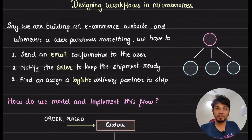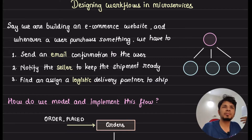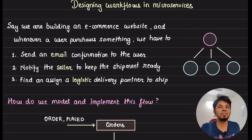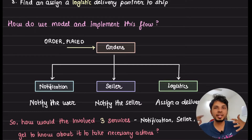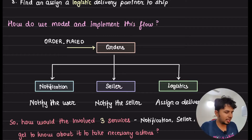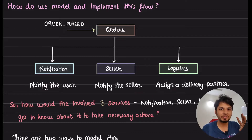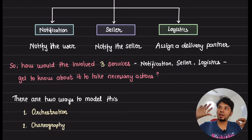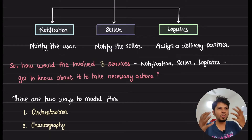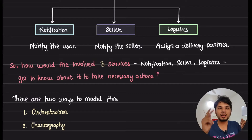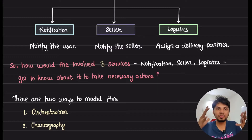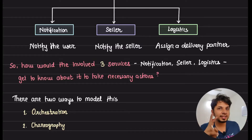Now, how are we going to implement workflows in a pure microservices-based architecture? Say we are building an e-commerce website and whenever a user purchases something, we have to send an email confirmation to the user, notify the seller to keep the shipment ready, and assign a logistic delivery partner to ship it. This can be visualized as a simple flowchart. There are two ways to model such workflows: orchestration and choreography.